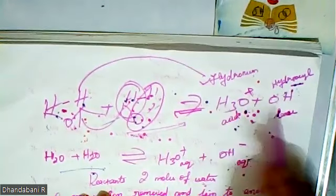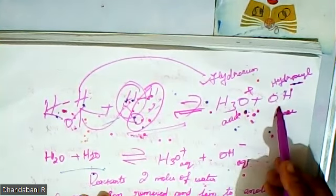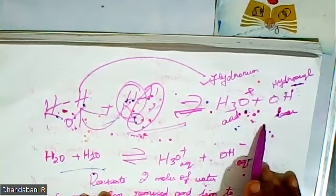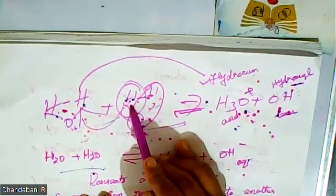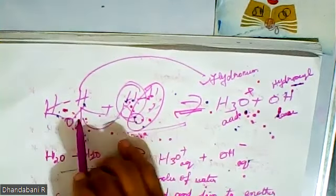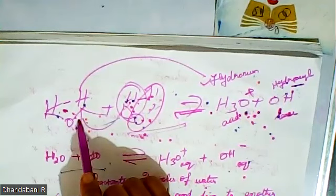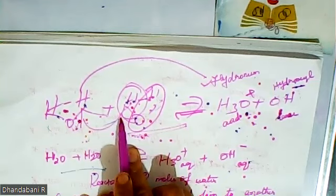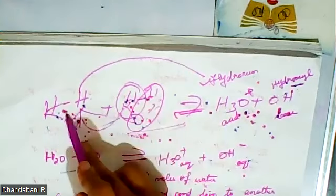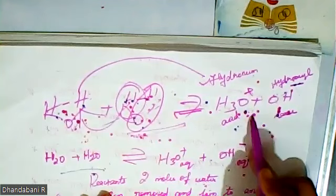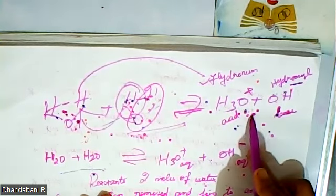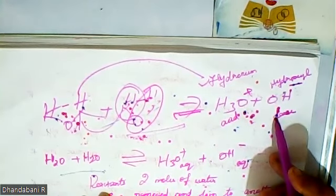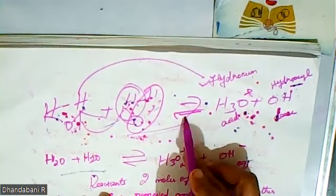One product is hydronium, another one is hydroxyl. This reaction is called as ionization reaction. The hydrogen ion is removed to join another water molecule. This is the ionization reaction, and it is a reversible reaction.